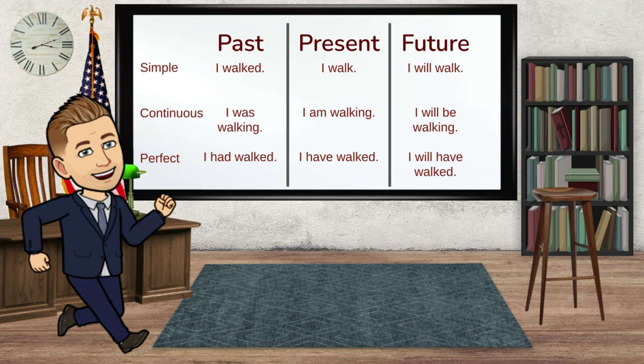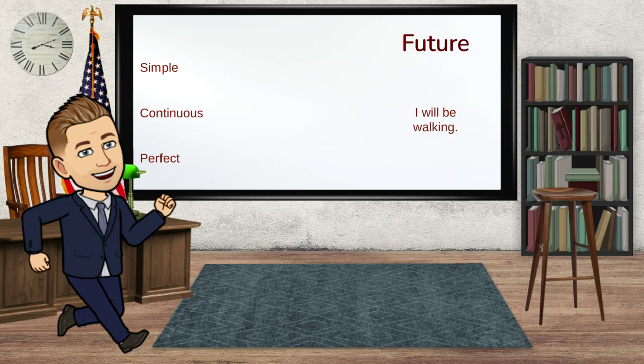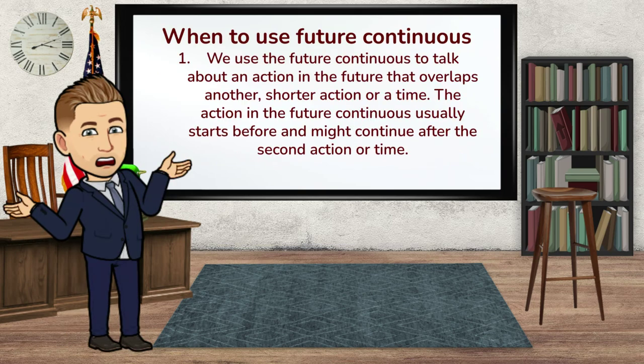They will be walking. He will be walking. You will be walking. We will be walking. It doesn't matter the pronoun or the noun that you're using — 'will be' is always going to be in front of that ING word. So that's what we're focusing on today: the future continuous.